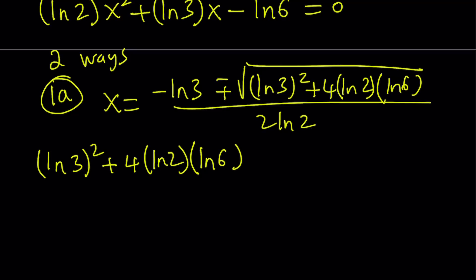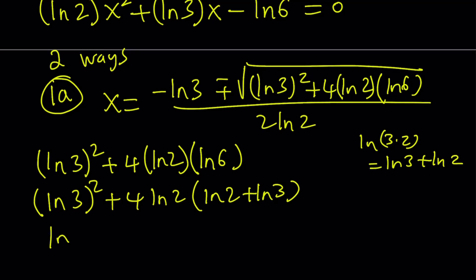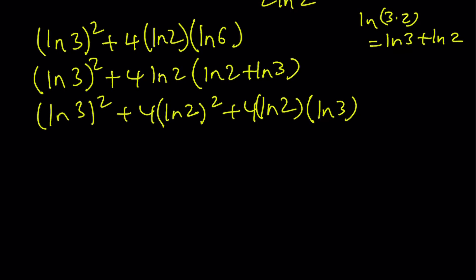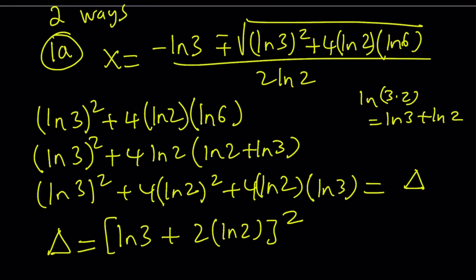Let's simplify the expression under the radical. Since 6 is 3 times 2, I can write ln(3·2) as ln3 + ln2. This becomes (ln3)² + 4(ln2)² + 4ln2·ln3. Let's call this delta, the discriminant. Hopefully you notice this is a perfect square: delta = (ln3 + 2ln2)². Since I'm going to square root that expression, I can write it without the square.